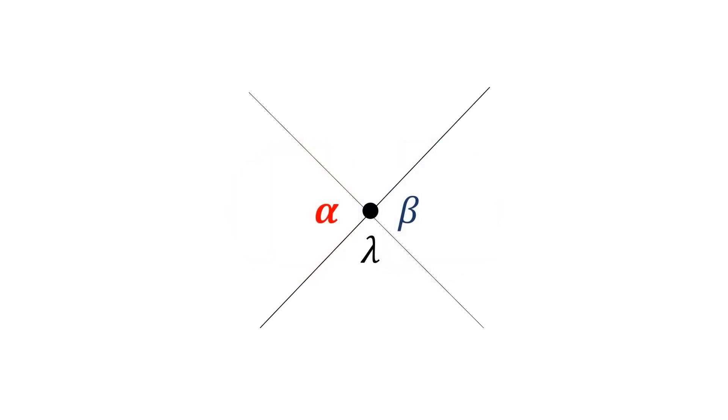we've modeled the interaction using this diagram, where the vertex is described by the coupling parameter lambda, alpha is the state before the interaction, and beta is the state after the interaction.